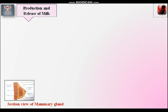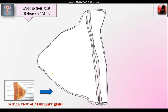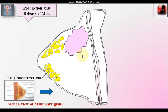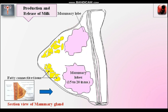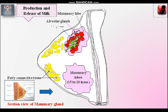This milk provides nourishment to the developing baby. Here is the sectional view of the mammary gland. The mammary gland is made up of fatty connective tissue and glandular tissue. The glandular tissue contains mammary lobes and lactiferous ducts. The mammary lobes are irregular in shape and number 15 to 20. Each mammary lobe contains alveolar glands, which are made up of many alveoli.